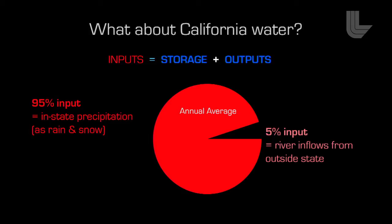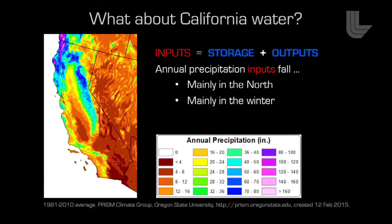Going back to California — 95% of the water used in California actually falls as precipitation within the state. The other 5% is imported water, such as water from the Colorado River watershed that flows in. There's a picture here of annual average precipitation over the last 30 years, showing most precipitation falls up north in the blue areas, with very little in the southwest desert areas. It also primarily falls in the winter, so in summer it's pretty much dry everywhere.